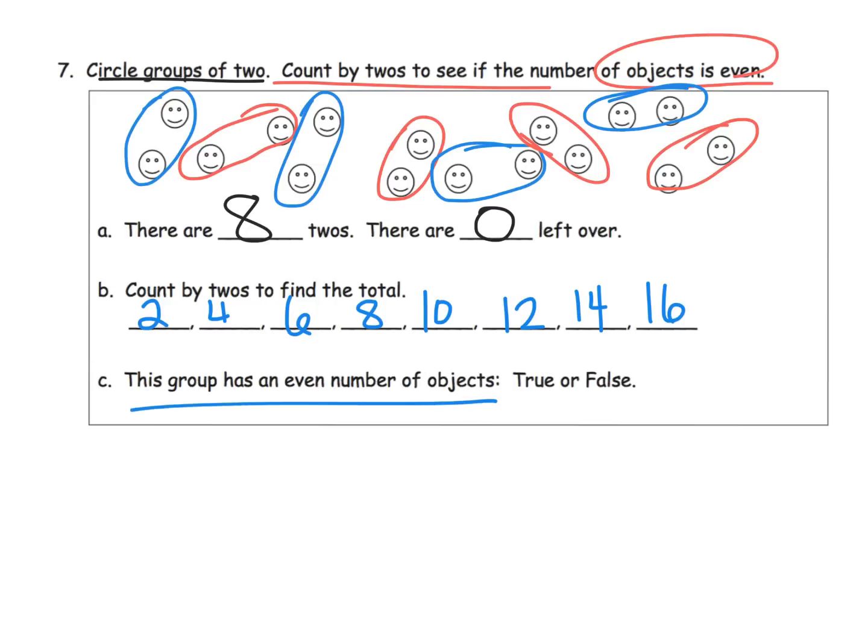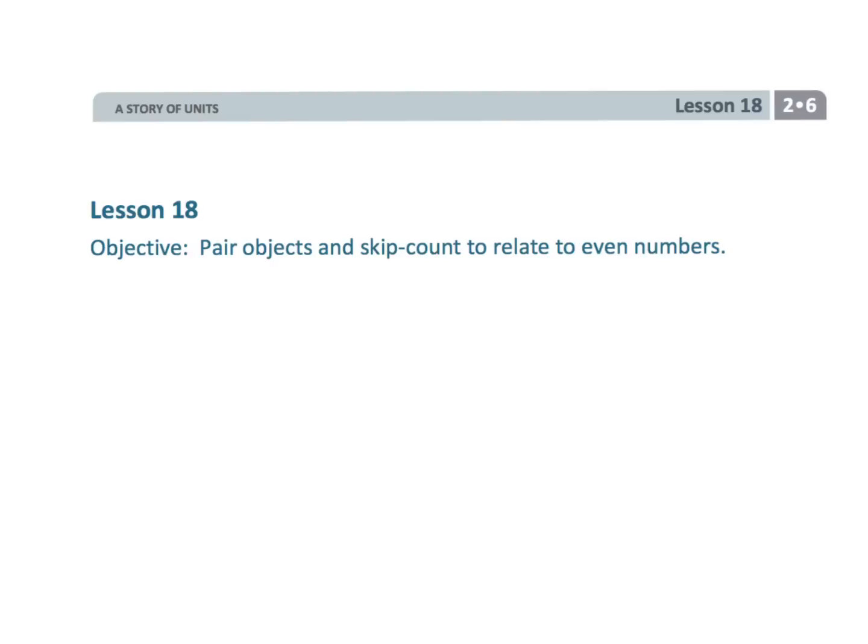This group has an even number of objects, true or false? Of course, since nobody is left without a partner, everybody has a partner. This is a true statement. It is an even number.